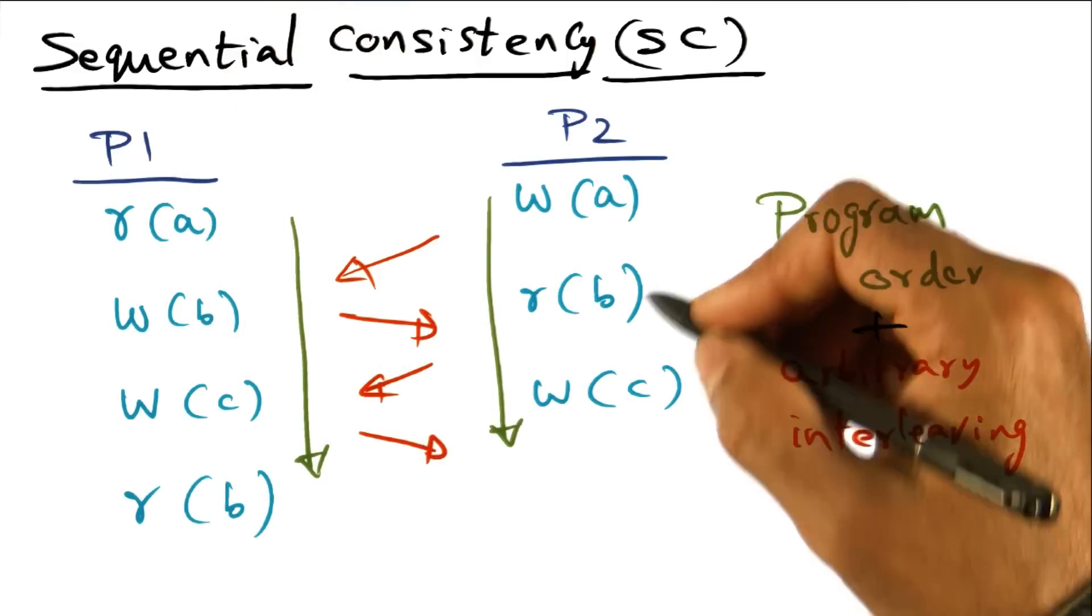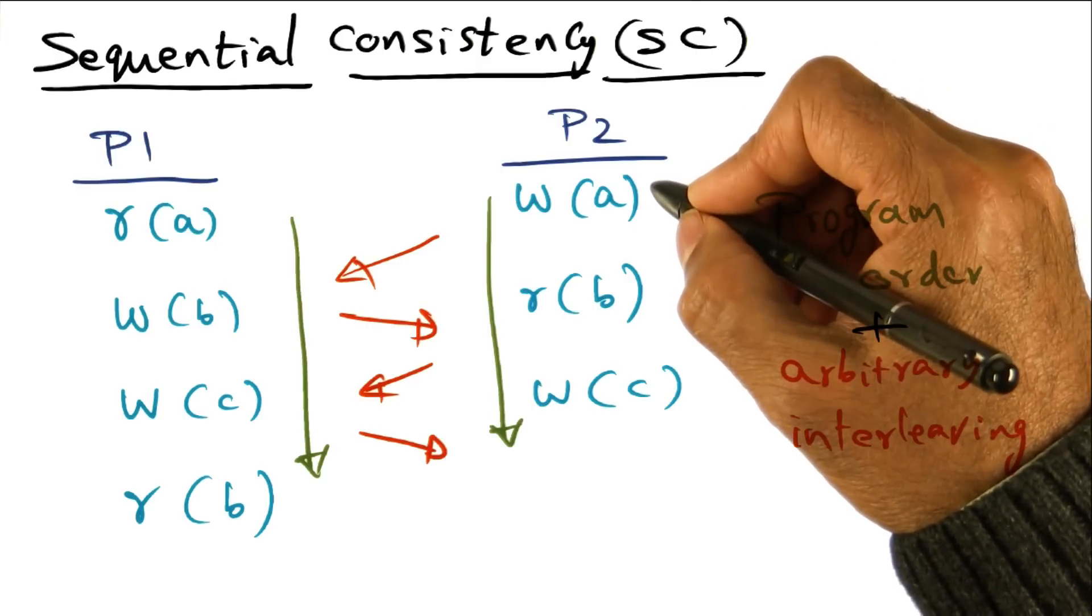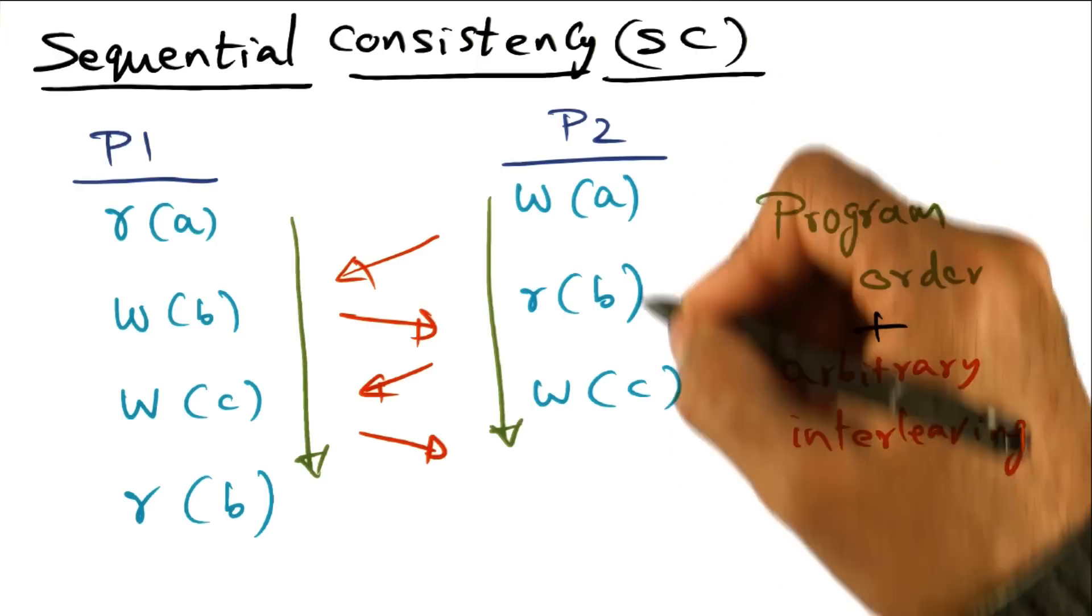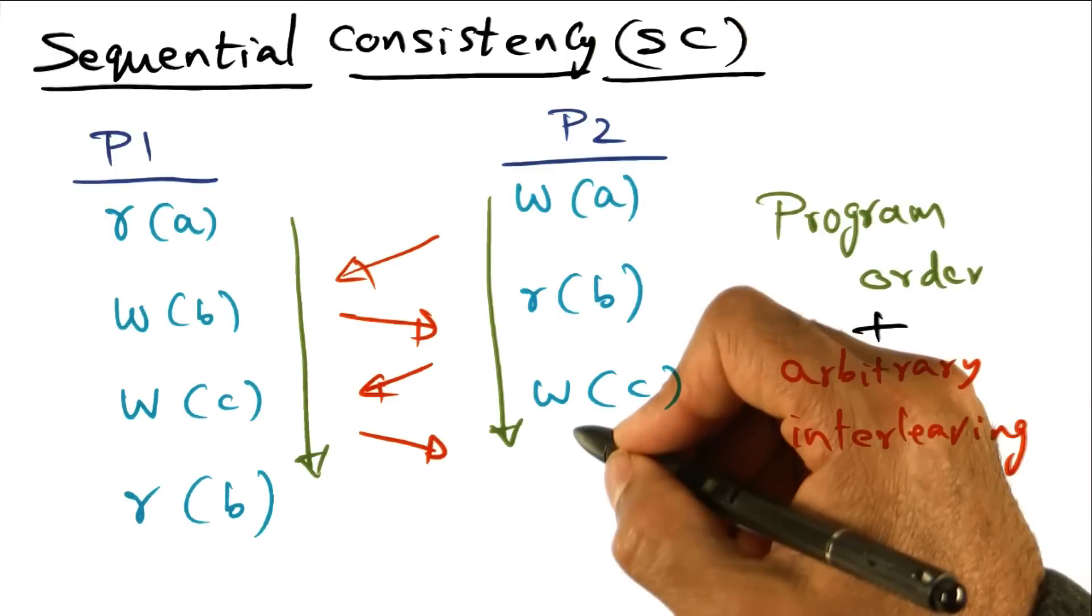Similarly, if you see the set of memory accesses that are happening on a different processor P2, once again, the expectation is that the order in which these memory accesses are happening are the textual order.